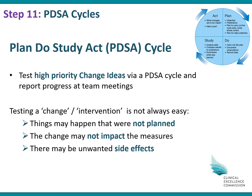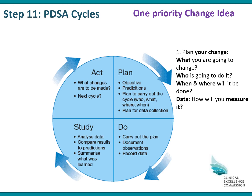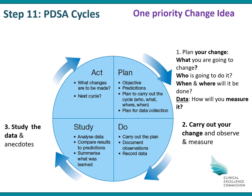A PDSA cycle is just like a small trial or a small pilot. You don't really want to roll some of your interventions or change ideas out in a big way initially because you need to test them to make sure there aren't any side effects. A Plan, Do, Study, Act cycle works like this: you choose one priority change idea at a time. You plan your change — what are you going to change, who's going to do it, when and where will it be done, and what data will you use to measure that a change is an improvement. The Do is where you carry out the change and observe and measure. The Study is looking at that data and the anecdotes. And the Act is working out what you are going to do next.